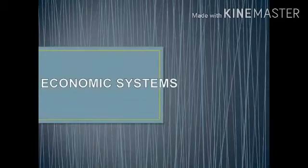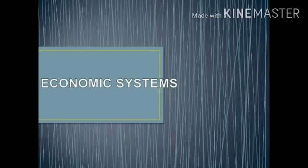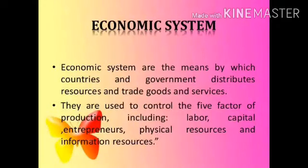So what is an economic system? We have discussed about economics, positive economics, and normative economics. Now what is economic system? Economy includes economic system. Economic system is that system in which all the economic activities take place. Economic systems are the means by which countries and governments distribute resources and trade goods and services.